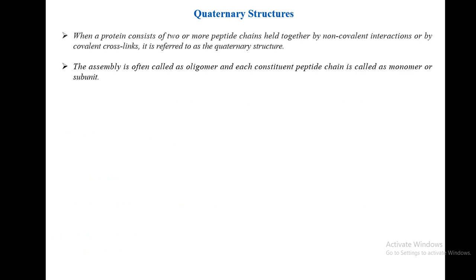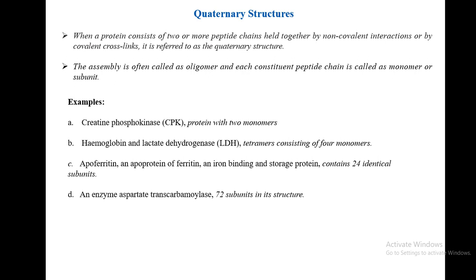Quaternary structure: many proteins are made up of only one peptide chain, but when a protein consists of two or more peptide chains held together by non-covalent interactions or covalent cross-links, it is referred to as quaternary structure. The assembly is called an oligomer and each constituent peptide chain is called a monomer or subunit. Examples include hemoglobin, lactate dehydrogenase, apoferritin, aspartate transcarbamylase (72-subunit structure), and creatine phosphokinase (two monomers).